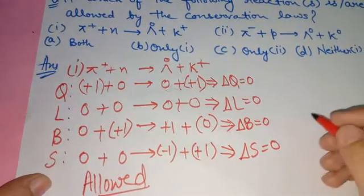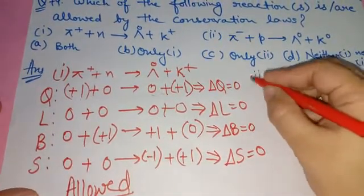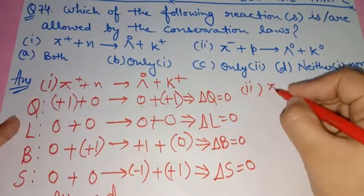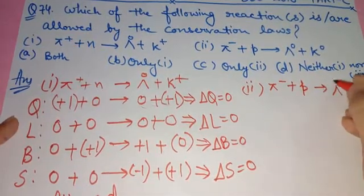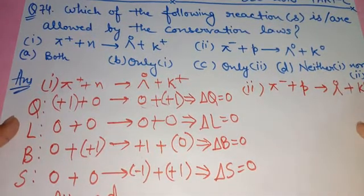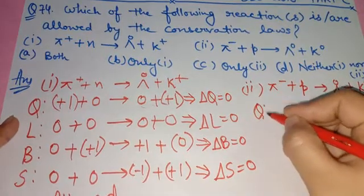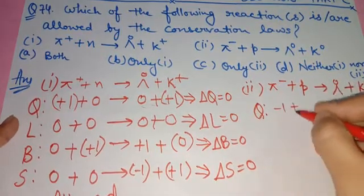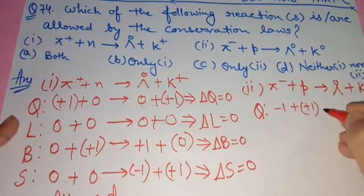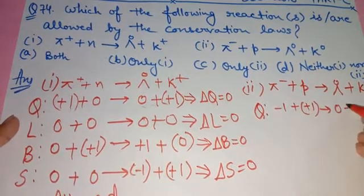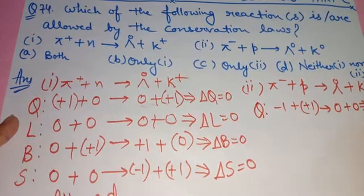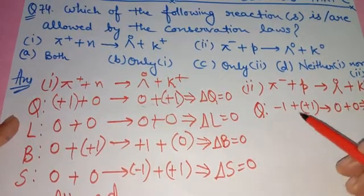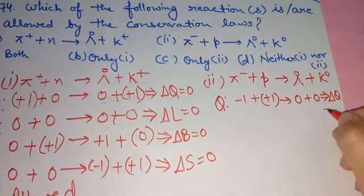Now for the second reaction: pi negative plus proton gives lambda naught plus k naught. First, let's check the charge. Pi negative has charge -1, proton has charge +1 — total reactants charge is 0. Lambda naught has charge 0, k naught has charge 0 — total products charge is 0. So the total charge difference is 0, and charge conservation is satisfied.